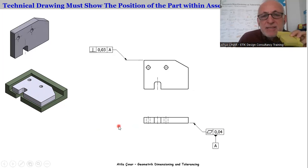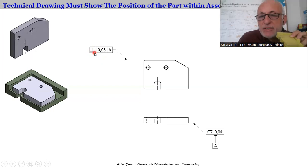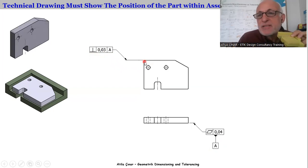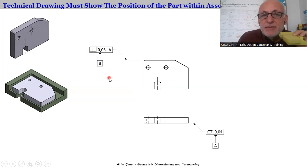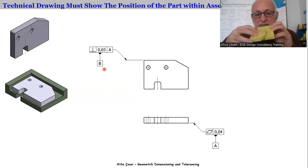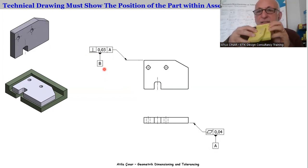Then we continue drawing. Let's say we put another geometric symbol here, which is perpendicularity: 0.03 millimeters, according to A. So this surface will be perpendicular to A, by this much. And if we say this surface is datum B, this is the second datum, the second leader. This shows that the part will contact with the other part using this surface — a second interface will be achieved by datum B.